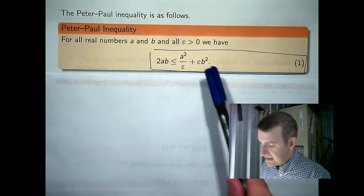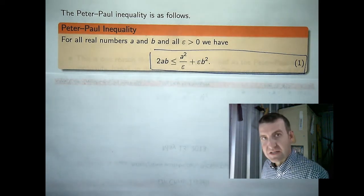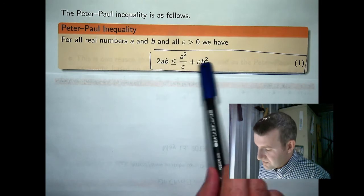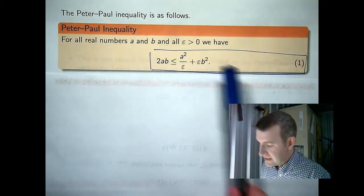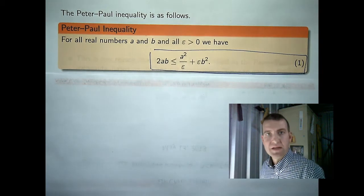On the other hand, if epsilon is chosen to be large, then this will be large, and this will be small. So, something big plus something small.